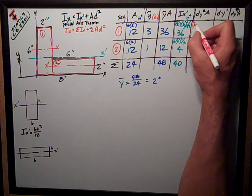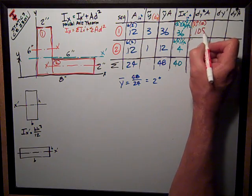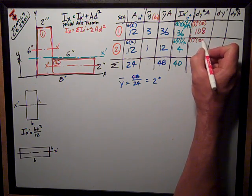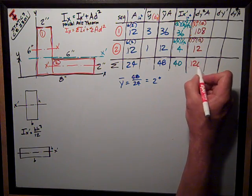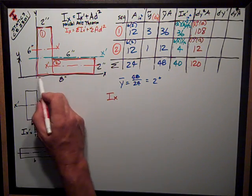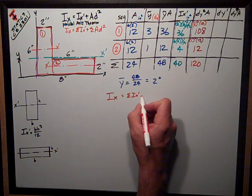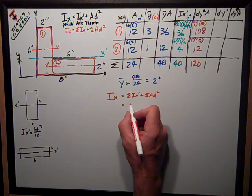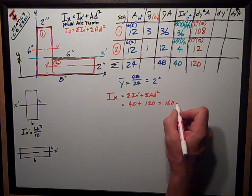3 squared times 12 is equal to 108. 1 squared, obviously, times 12 is 12. I sum that up, I get 120. And so, ix, the moment of inertia about this x-axis is the sum of ix-prime plus the sum of the ad squared terms, which is equal to 40 plus 120 is equal to 160 inches to the fourth.